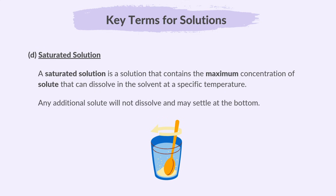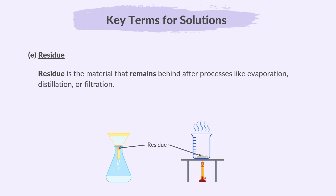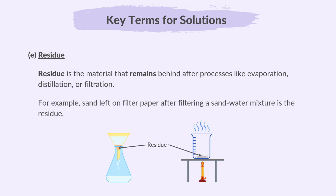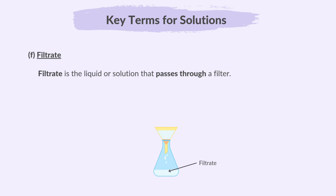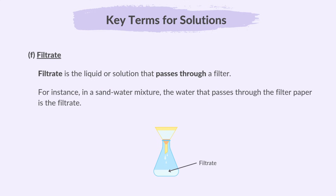Any additional solute will not dissolve and may settle at the bottom. Residue is the material that remains behind after processes like evaporation, distillation or filtration — for example, sand left on filter paper after filtering a sand-water mixture is the residue. Filtrate is the liquid or solution that passes through a filter — for instance, in a sand-water mixture, the water that passes through the filter paper is the filtrate.